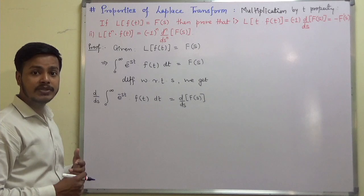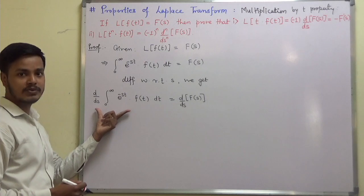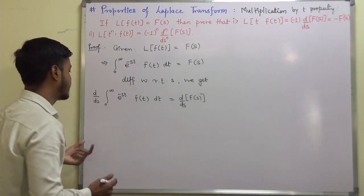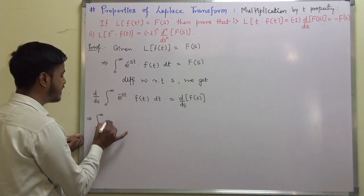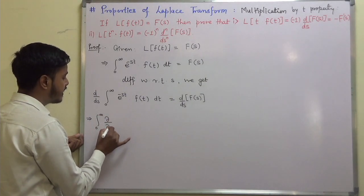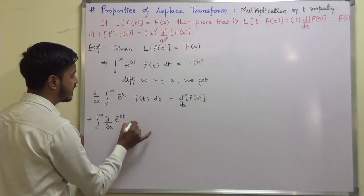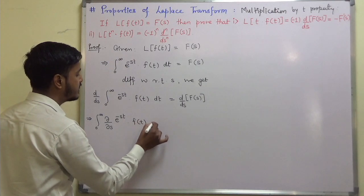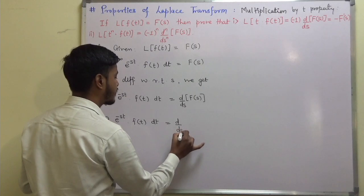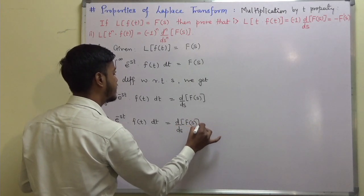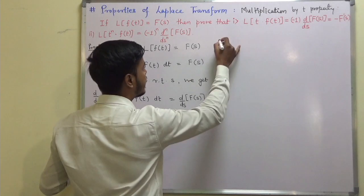Now let me remind you of the Leibniz rule of differentiation under the integral sign, which we are going to use here. Applying the Leibniz rule, this implies the integral from 0 to infinity of the partial derivative with respect to s of e^(-st) · f(t) dt equals d/ds of F(s).